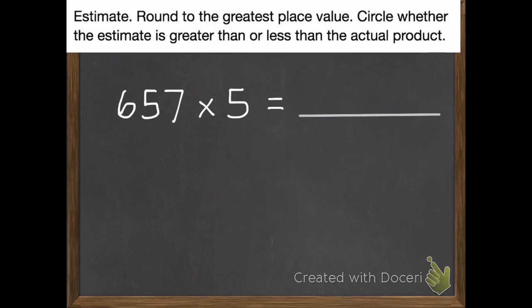So first of all, I need to estimate to the greatest place value, which is my hundreds place. So I'm going to decide if this is closer to 600 or 700. I do that by looking at the next digit to its right. If it's a 5 or higher, then we round up to 700, which it is.